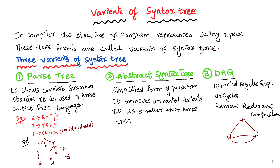There are three types in syntax trees. The first one is called parse tree, the second one is called abstract syntax tree, and the third one is called DAG — DAG means directed acyclic graph. Let us discuss them one by one.